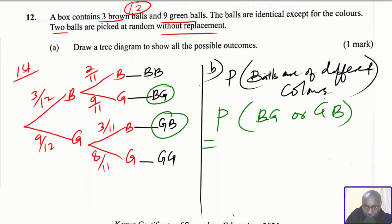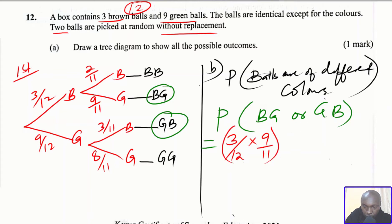The probability of picking brown then green: brown is 3/12, multiplied by green which is 9/11. In probability, 'and' means multiplication, and 'or' means addition. So for the brown-green branch, we multiply 3/12 by 9/11.